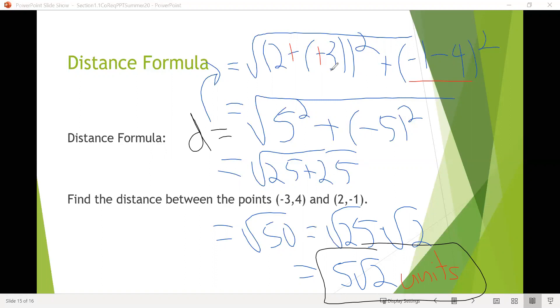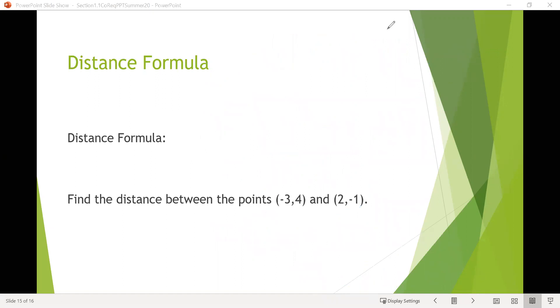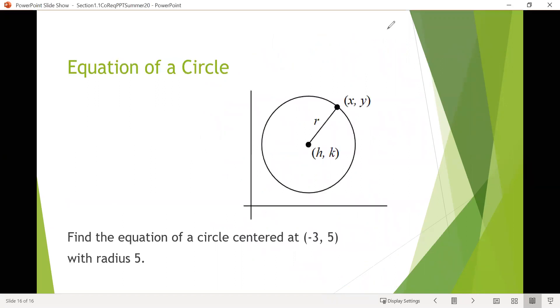Sometimes when you have something like five root two, that's kind of hard to envision in your head, so you could plug that in your calculator. When I do that, I get 7.071 is the distance between those two points. One last thing from this section, writing equations of circles.